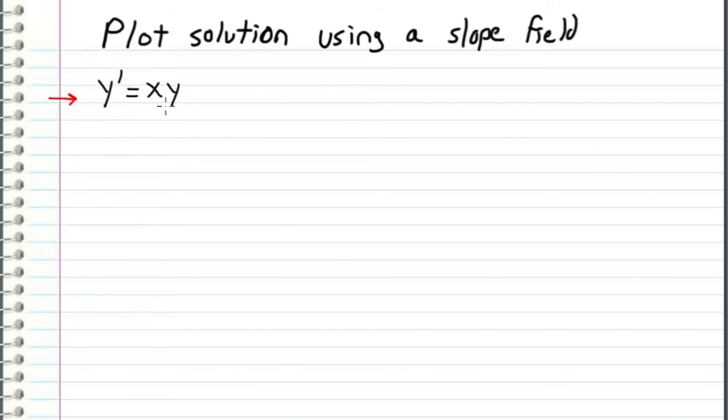Here we have an unknown function y and its first derivative y prime, which represents the slope of our unknown function y. In this example, we're going to be using a slope field to plot the actual solution to this differential equation.